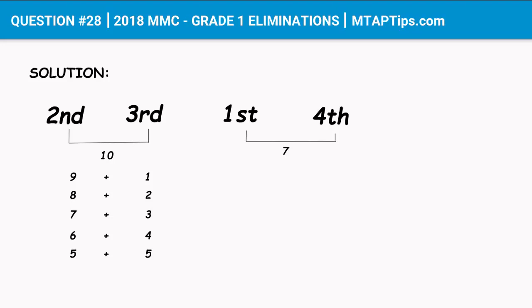Now let's look at the first and fourth monkey. If they have eaten seven bananas total, they could have eaten four and three, five and two, or six and one bananas. We cannot say seven and zero because it was mentioned in the problem that all monkeys ate at least one banana.